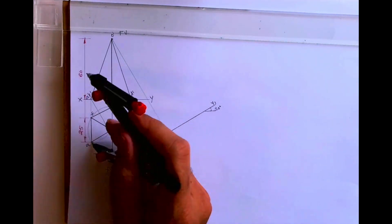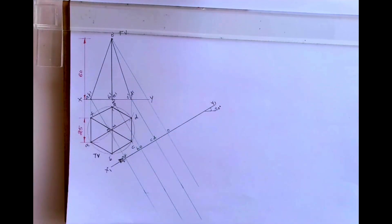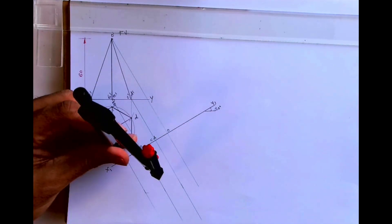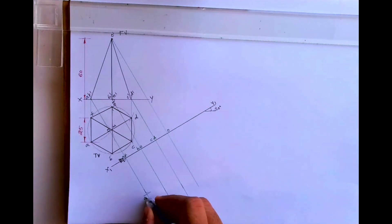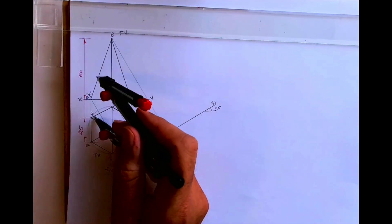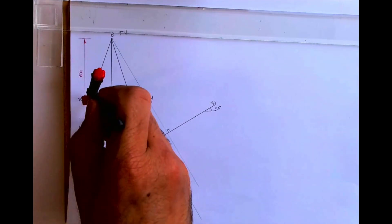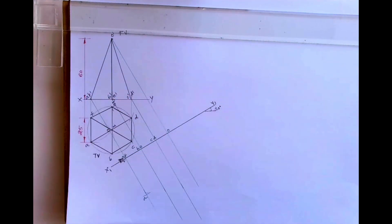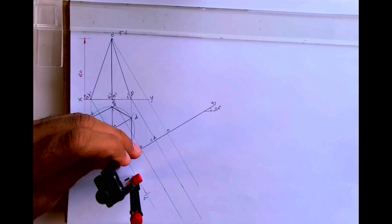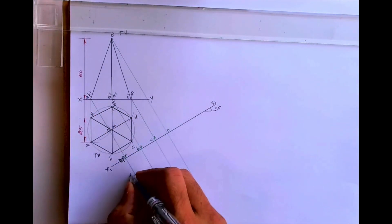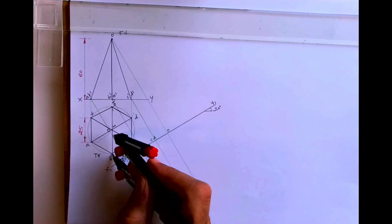Now I will take the XY distance to point A and cut it from X1Y1. Where we have marked A from there, we are just transferring the distance. Take this distance and from X1Y1 cut it down — so this gives us A. We'll do the same for F.